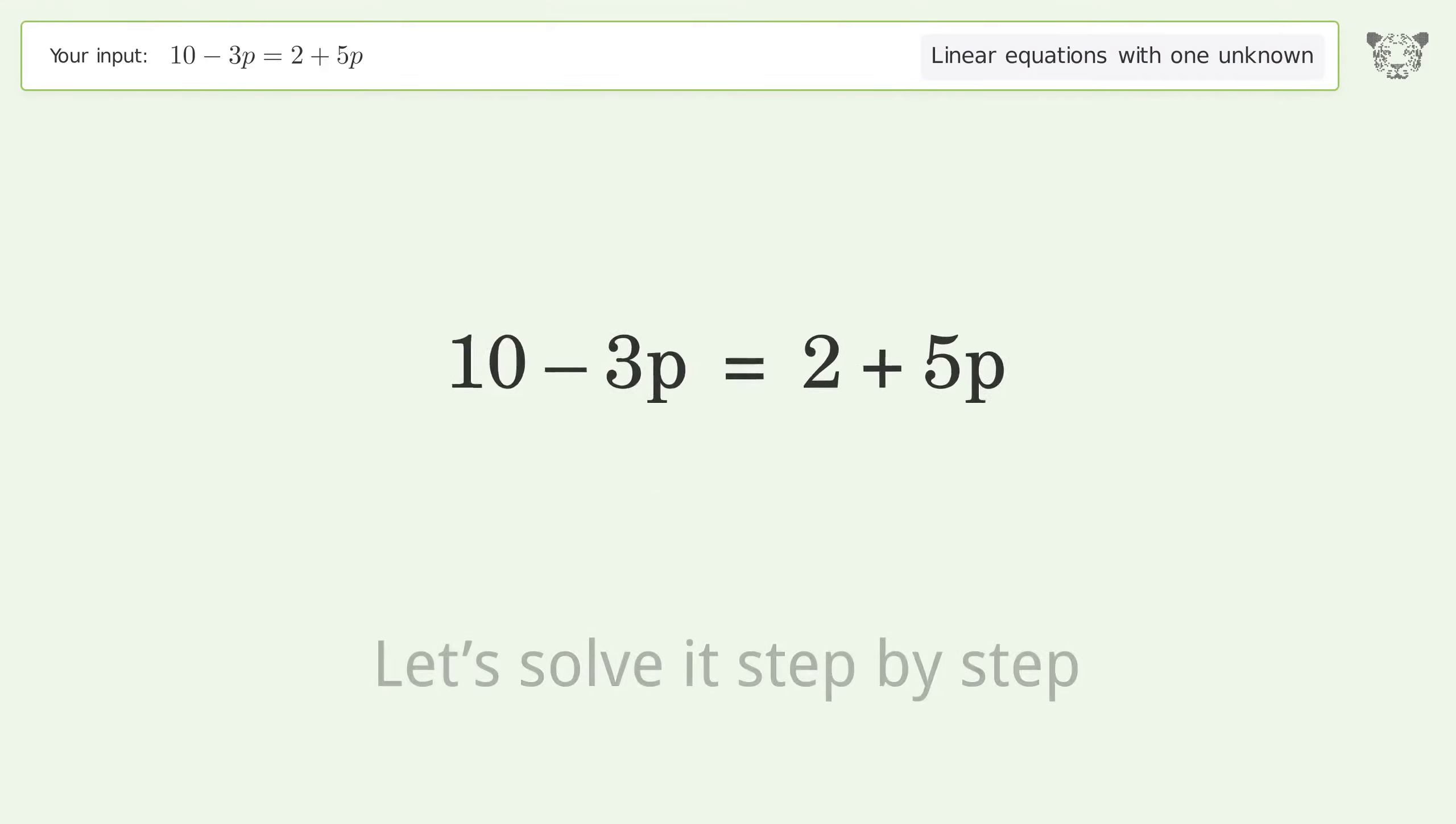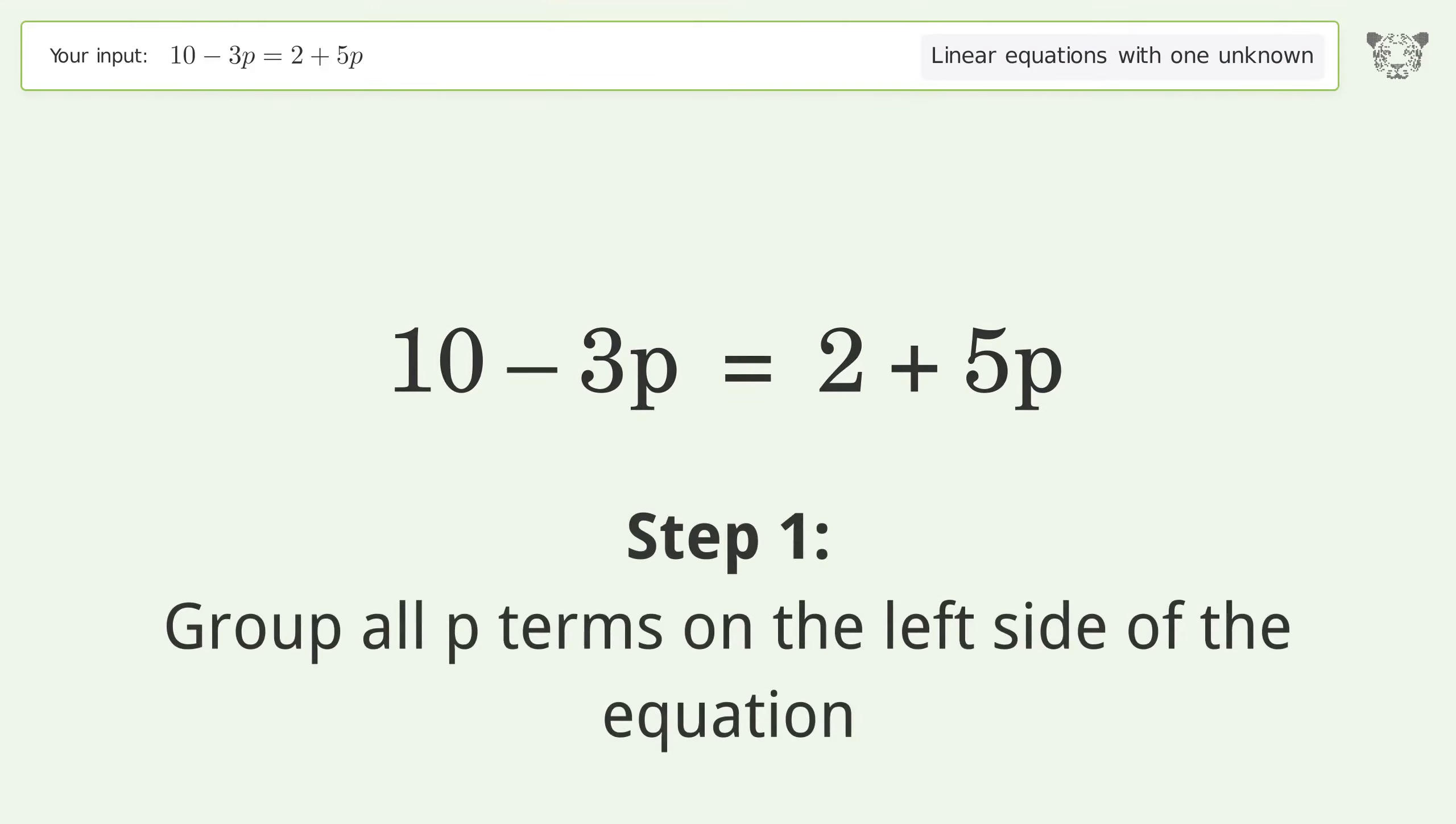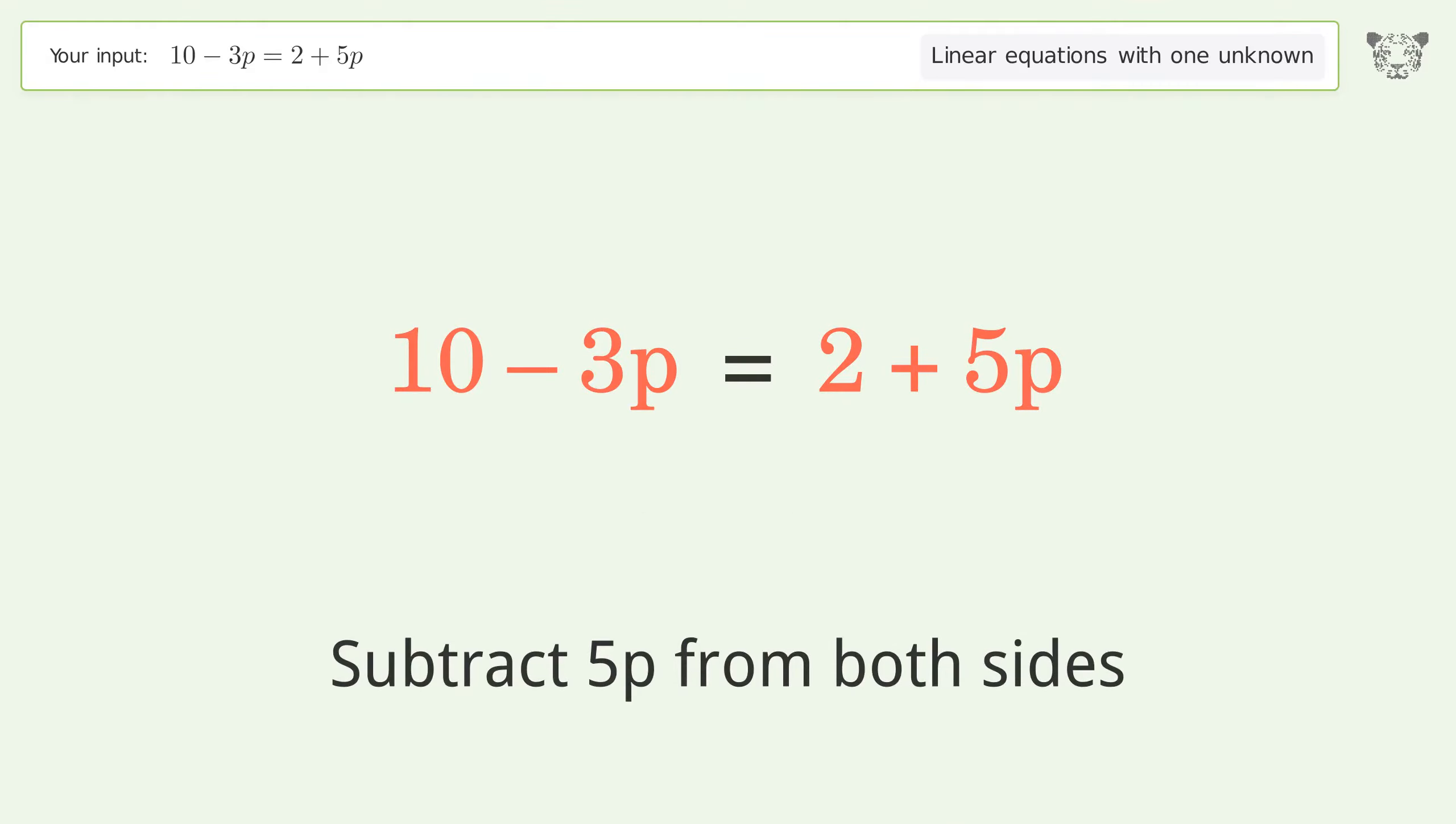Let's solve it step by step. Group all p terms on the left side of the equation. Subtract 5p from both sides.